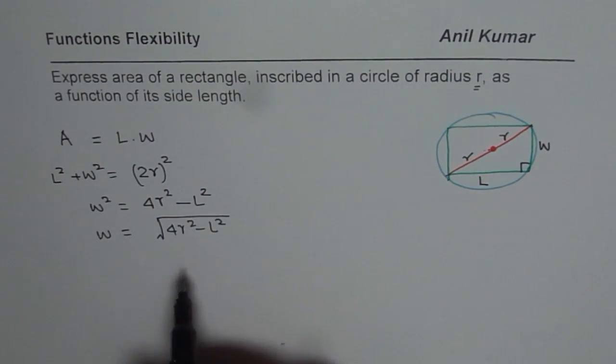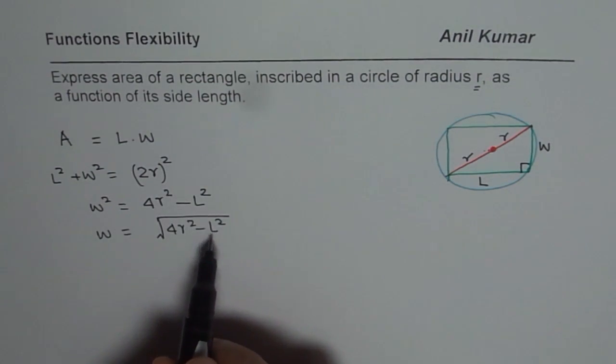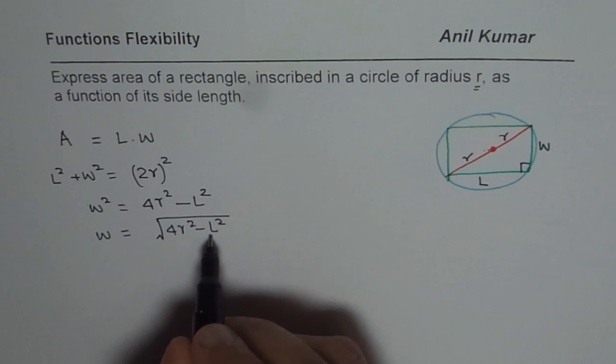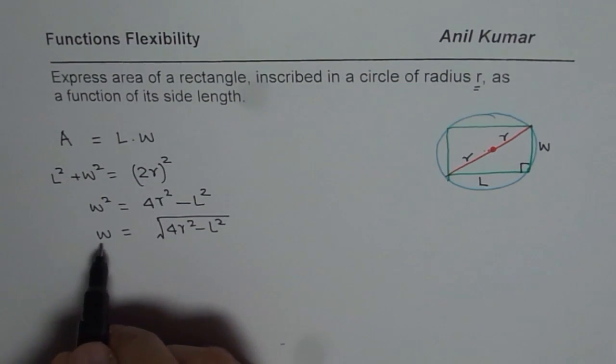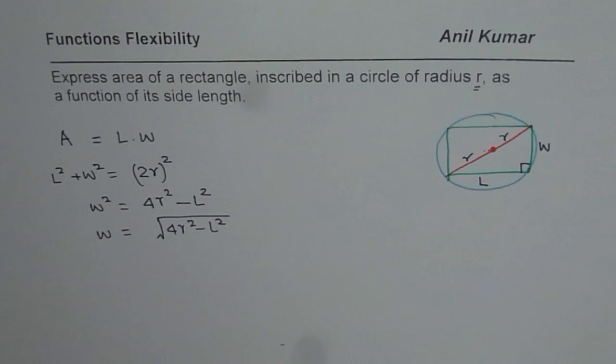So we get relation between w, radius, and L. If we know the radius then radius is constant. So the only variable here is the length of the rectangle. That's the beauty. So we will replace that width from here into the original formula of area.